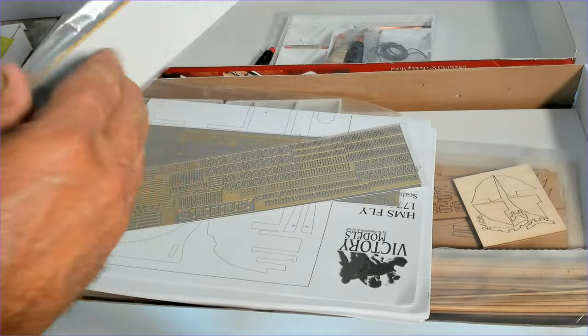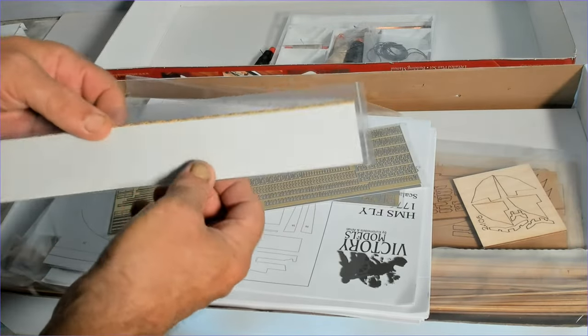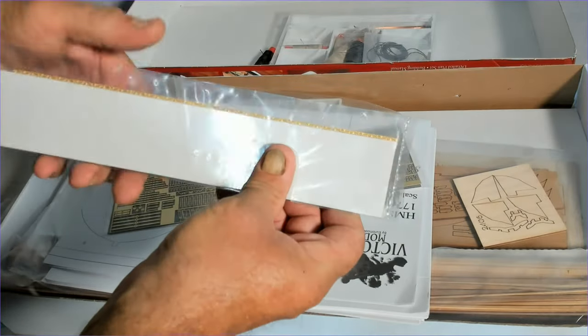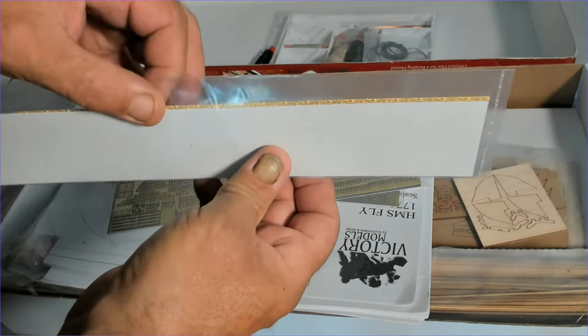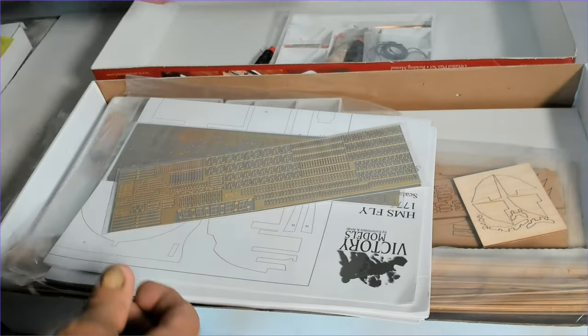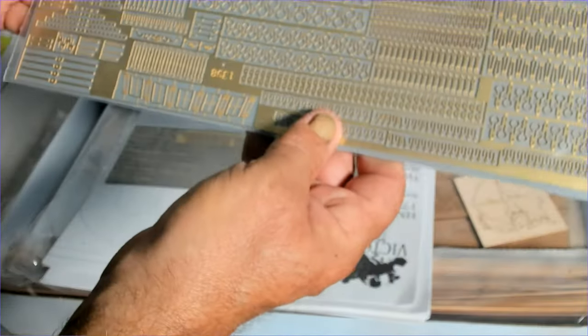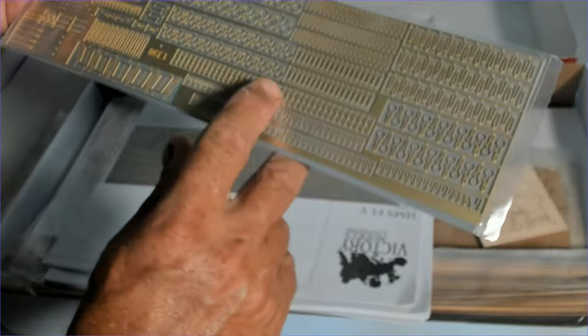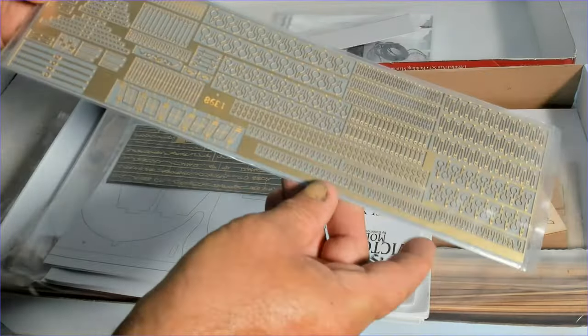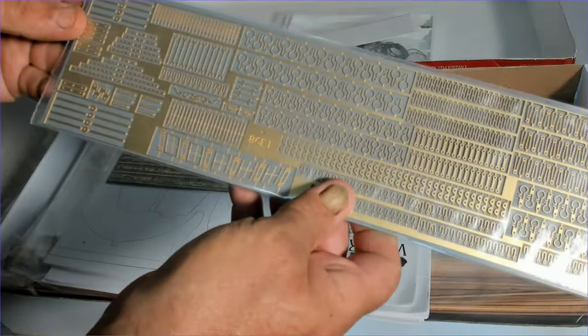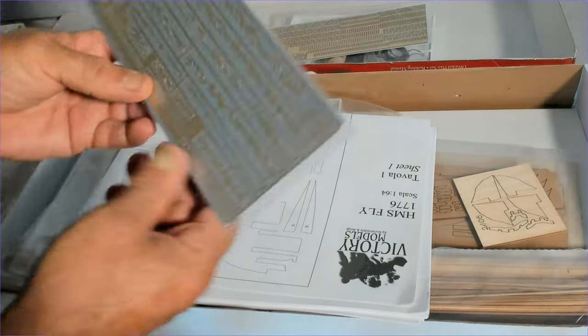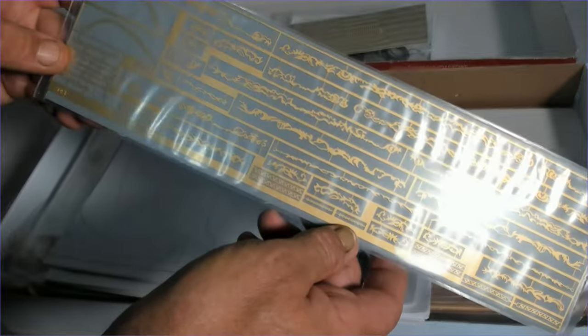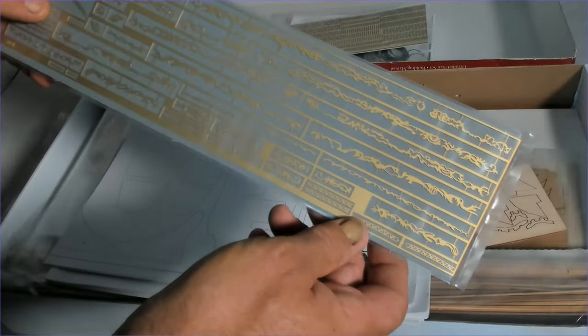Okay, so we have some photo etch pieces, but there's only one very thin piece of decoration in that one. More decoration. I believe it has a fair bit of decoration on the side of the ship and on the stern.